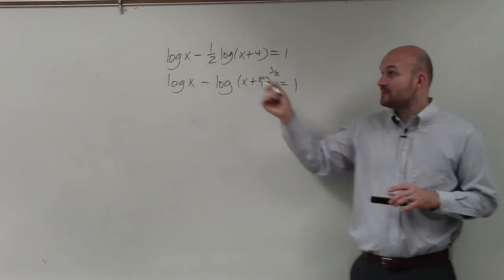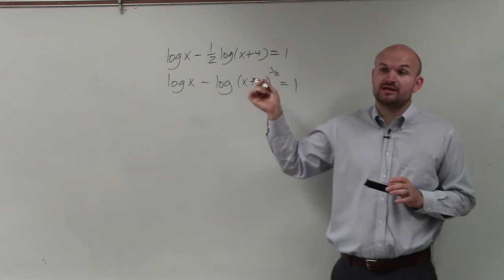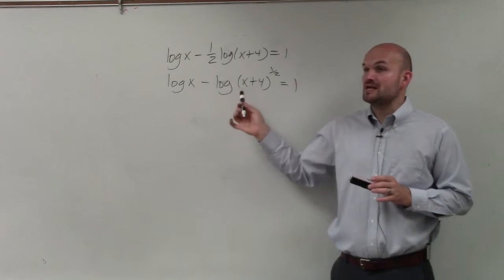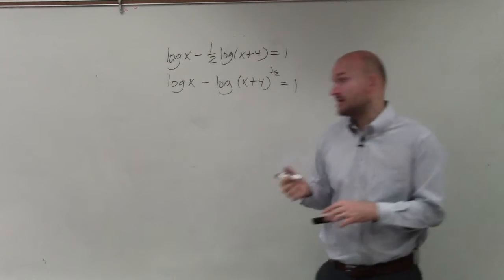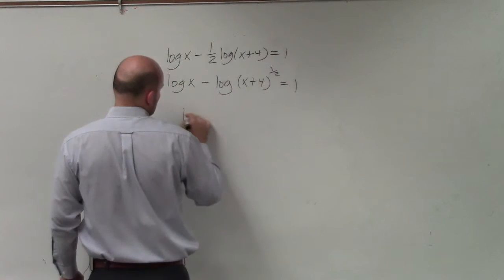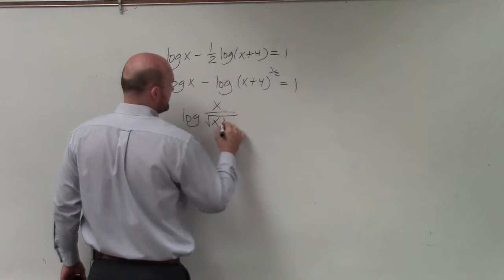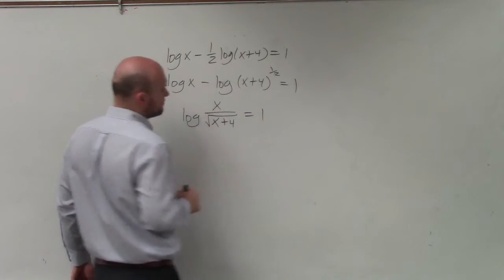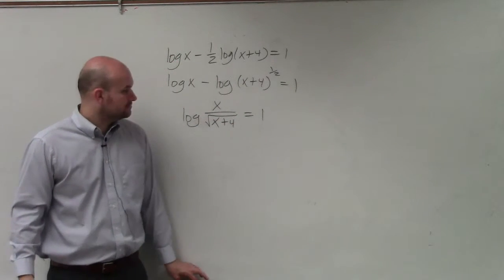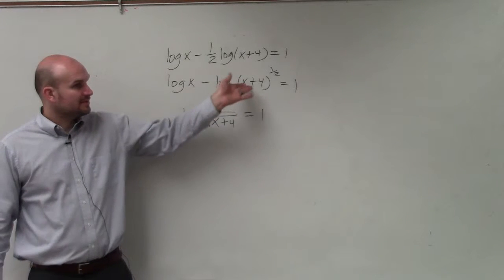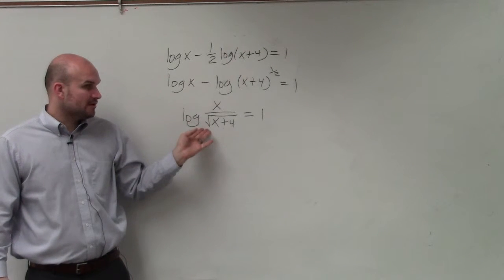Now remember, raising something to a rational power can be rewritten as a root. When you subtract two logarithms, that's the same thing as division. So this is log of x divided by the square root of x plus 4 equals 1. Something raised to the one-half power is the same thing as the square root.